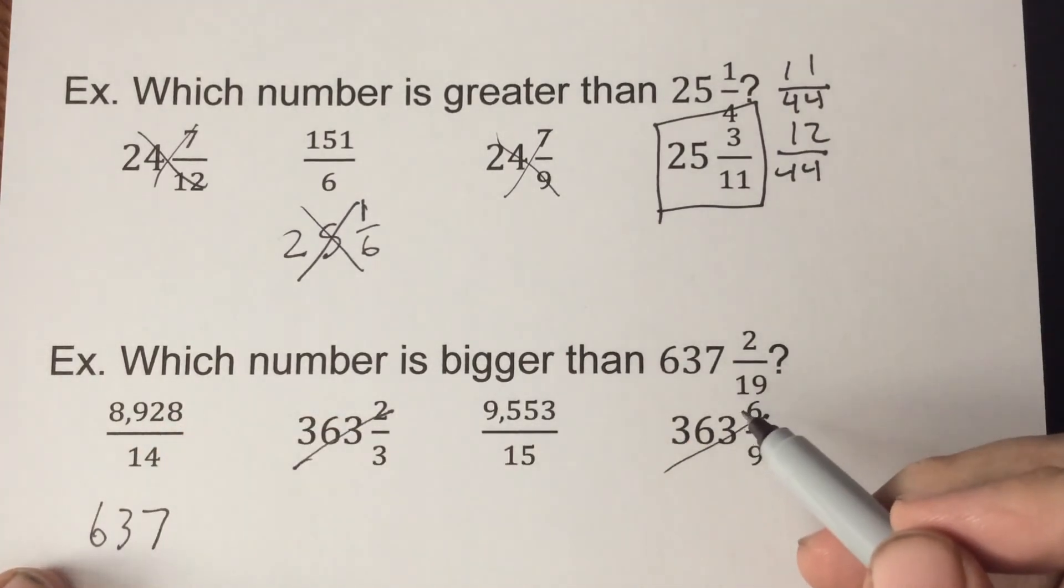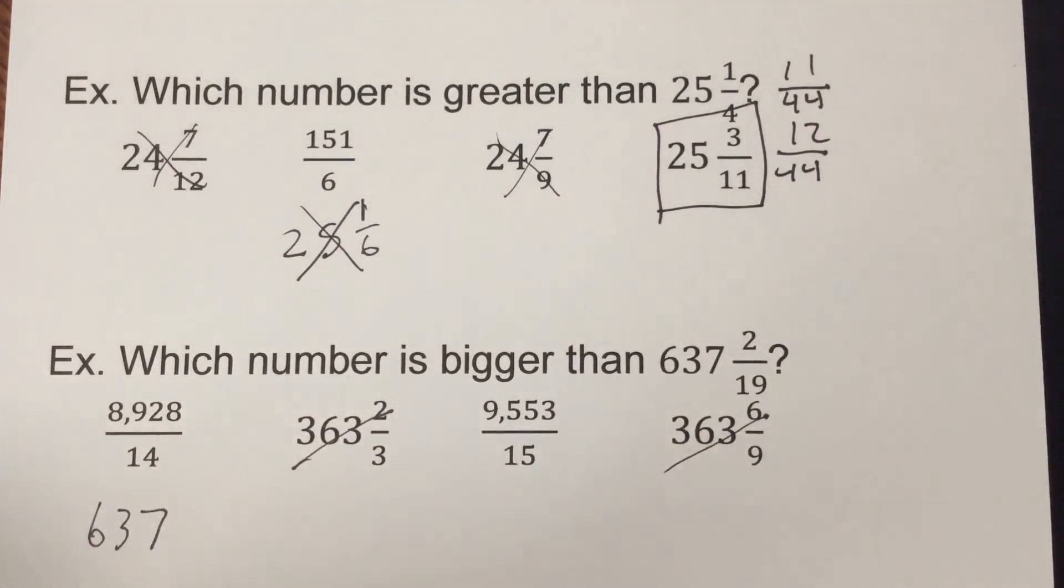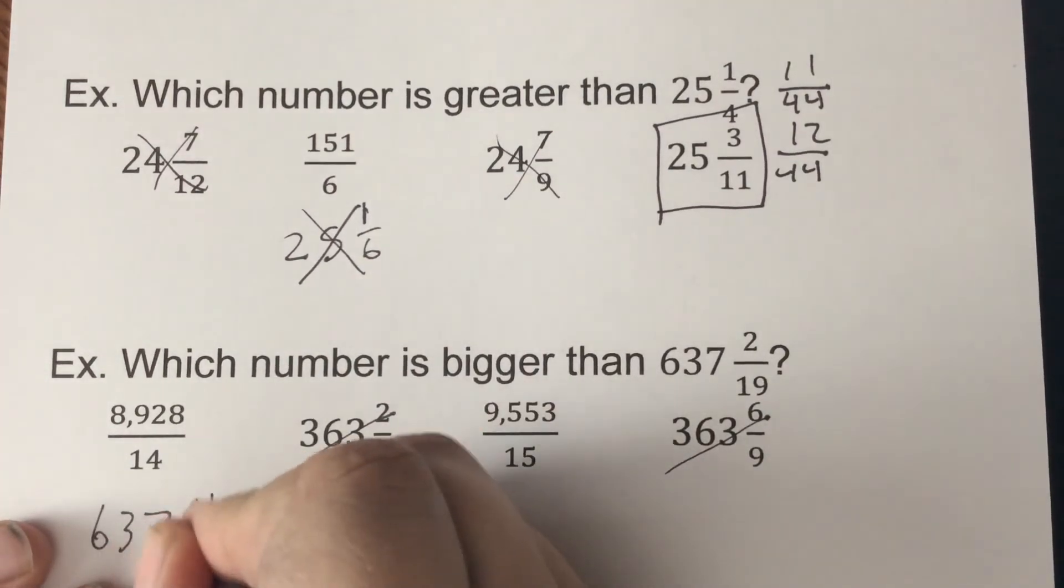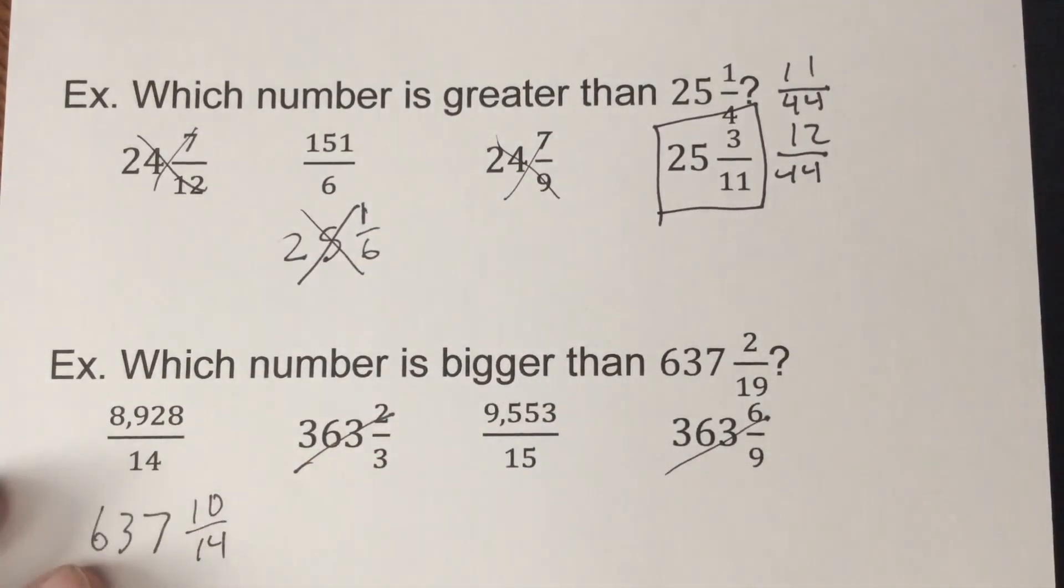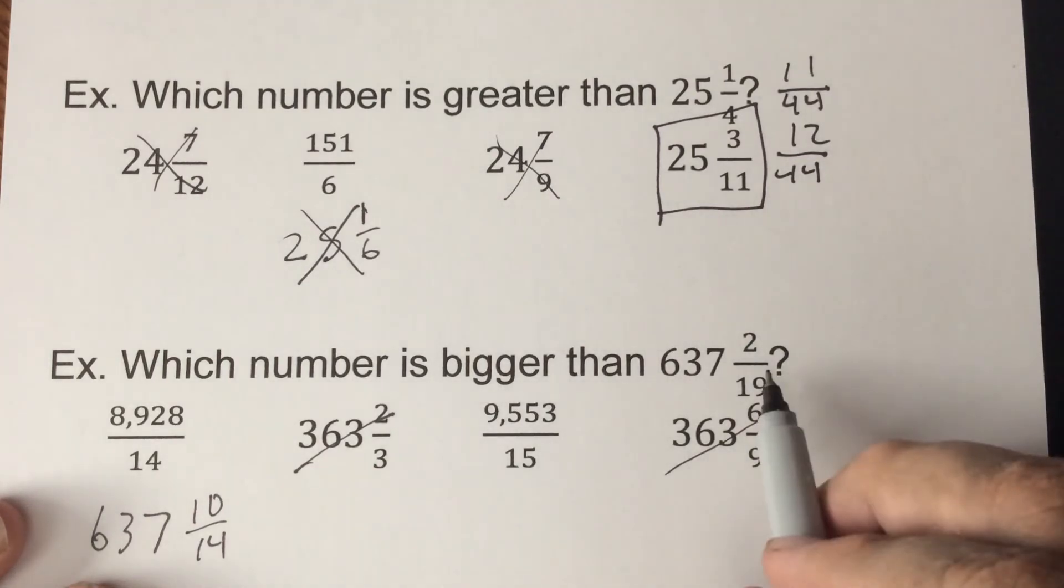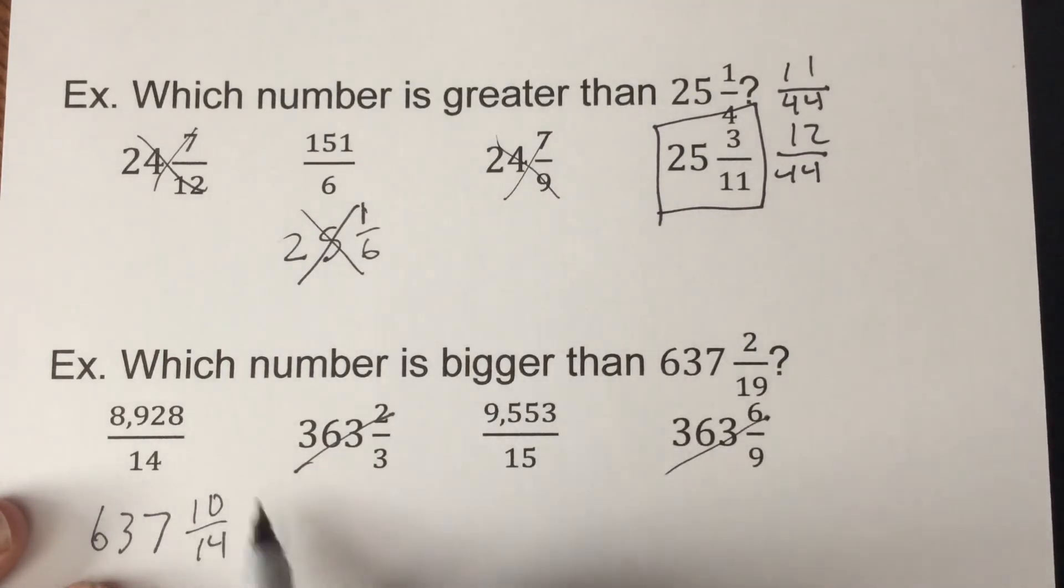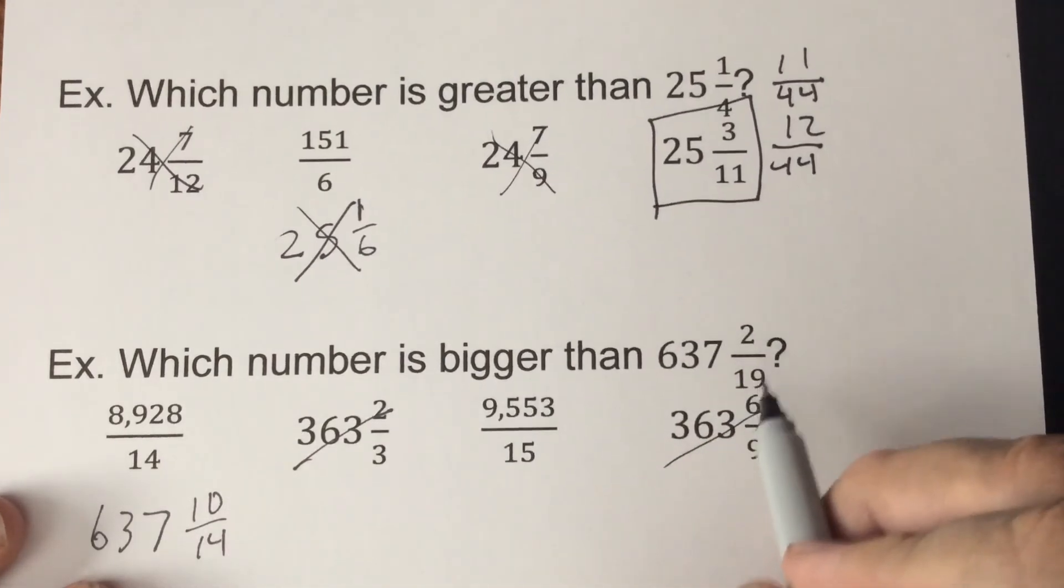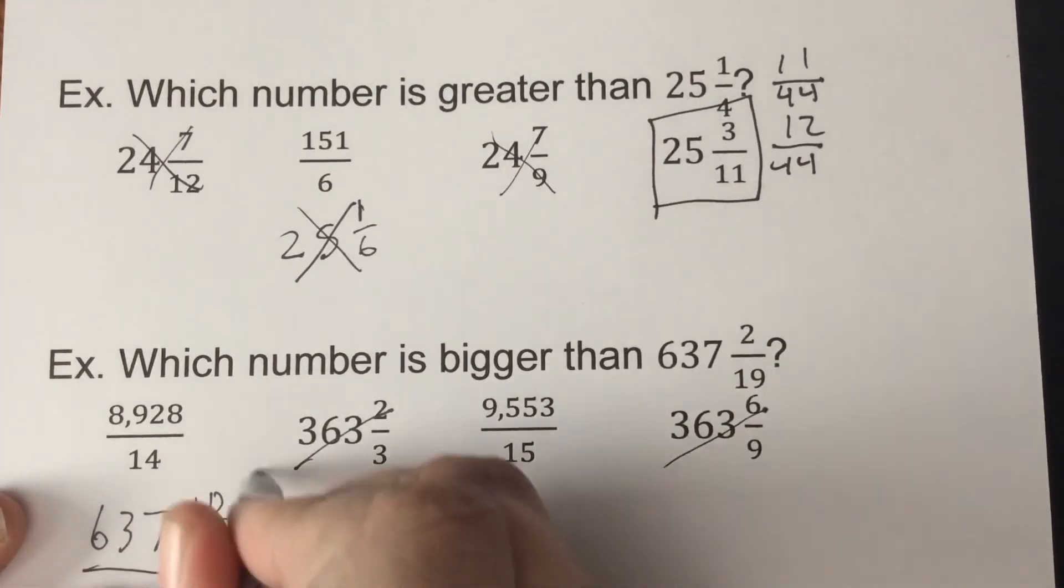So 8928 divided by 14 would be 637. So good start there. If I subtract my 637 and then take it times 14, I'd be left with 637 and 10/14. Got a good shot. If you think about it, 10 over 14 is more than halfway. 2 over 19 definitely is not. So this one should work.